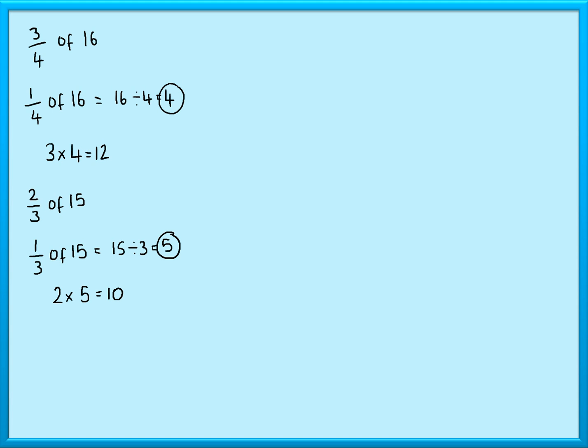And one more—what about seven-tenths of 60? First thing I'm going to do is find one-tenth of 60. That's 60 divided by 10, which is 6. I want seven-tenths, so I'll do 7 lots of one-tenth. That gives me 42.